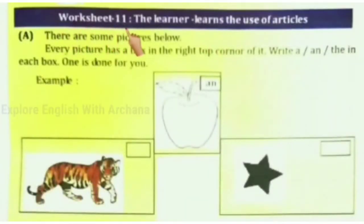Worksheet 11. The learner learns the use of articles. There are some pictures below. Every picture has a box in the right top corner of it. Write a, or an, or the in each box. One is done for you.